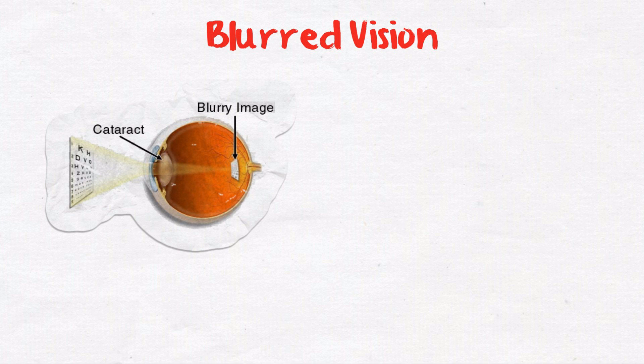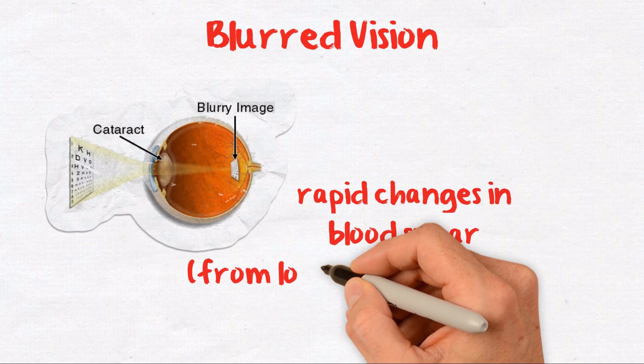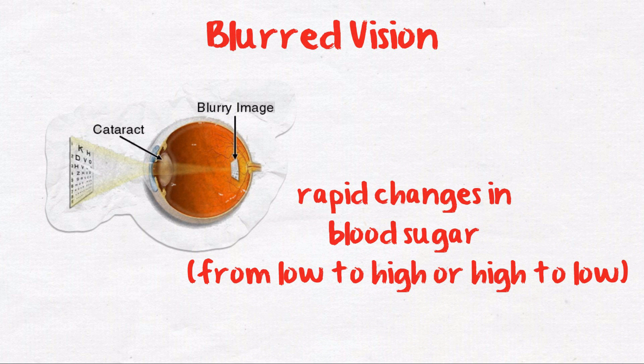Blurred vision occurs when there are rapid changes in blood sugar from low to high or high to low, and the eye muscles have not yet adapted to it.